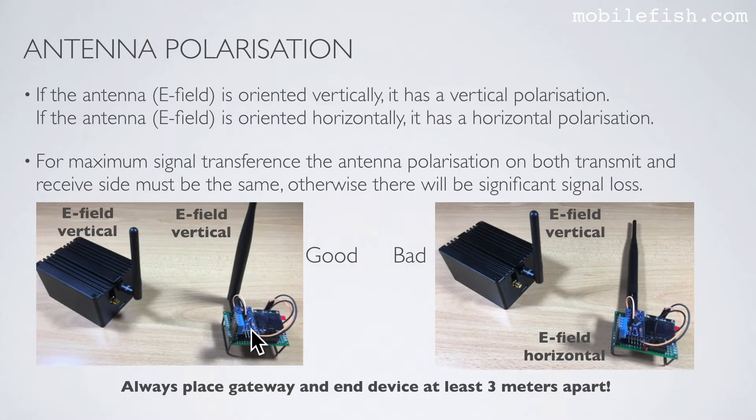This is the gateway and this is the node. The electric field of this antenna and the electric field of this antenna are both vertical. This is good. And this is a bad situation. The electric field is vertical, but here the electric field is horizontal. Always place the gateway and end device at least 3 meters apart.